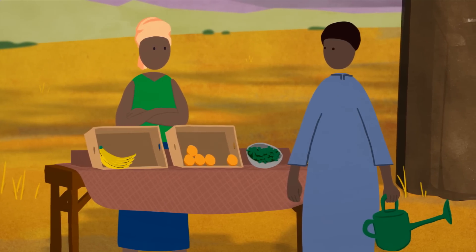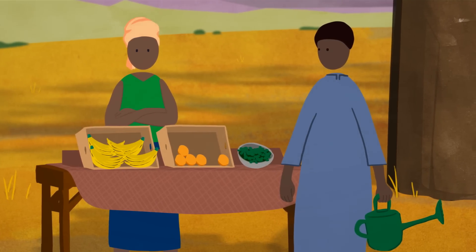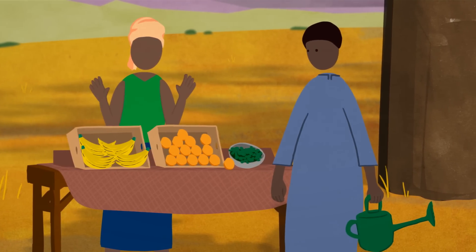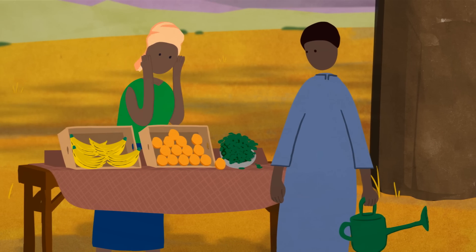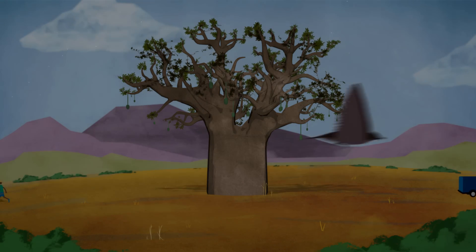The baobab fruit contains four times the potassium of a banana, three times the vitamin C of an orange, and twice the calcium of spinach, but the baobab is an orphan.